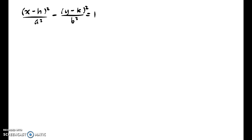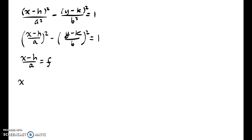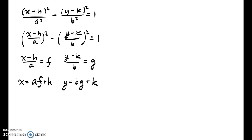That was just for ellipses. Now, what about hyperbolas? This is the general form for a horizontal hyperbola, meaning its foci are parallel to the x-axis. We can rewrite this as x minus h over a squared minus y minus k over b squared, with the whole thing squared. Again, x minus h over a equals f, so x equals a times f plus h. And y minus k over b equals g, so y equals b times g plus k. Putting things in terms of f and g, we find that f squared minus g squared equals 1.